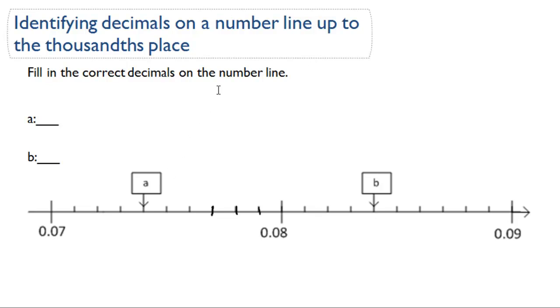Okay, so here we're given hundredths. We're given 0.07 or seven hundredths, and 0.08 or eight hundredths, and 0.09, nine hundredths.